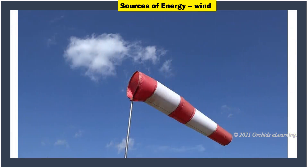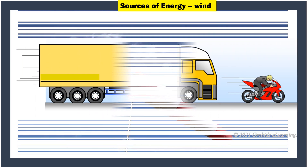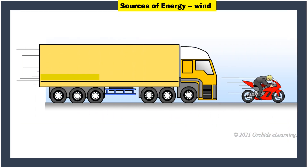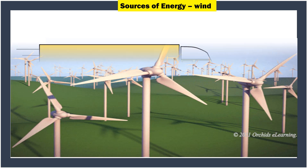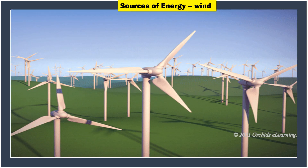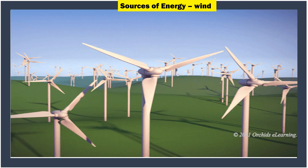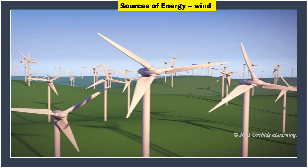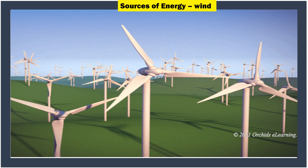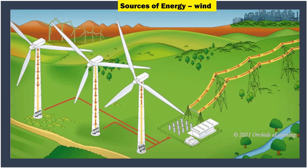Wind: Moving air is called wind. Any object that is moving has energy in it. The energy of wind, called wind energy, can turn windmills, which in turn can move turbines. The movement of turbines helps to produce electrical energy.